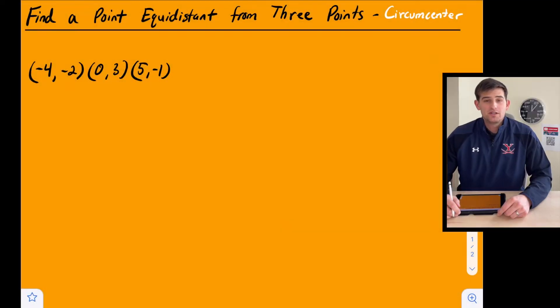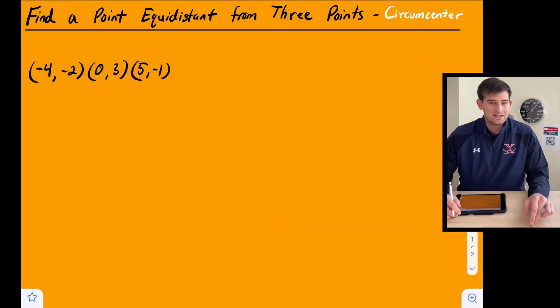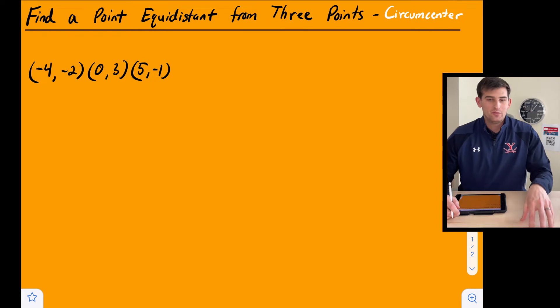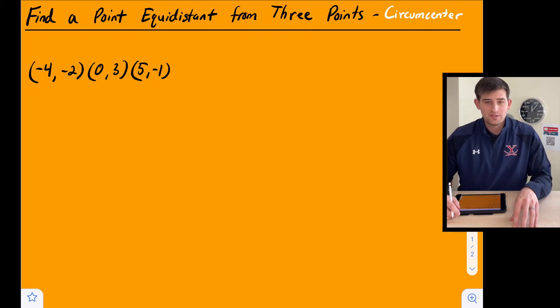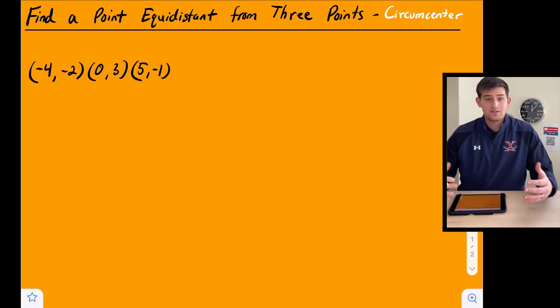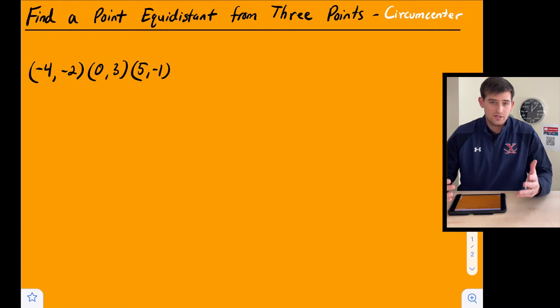Hello everyone. In this video we're going to talk about how do we find a point that is equidistant from three other points. This is also known as how do we find the circumcenter without graphing, without doing a construction. So here we go.